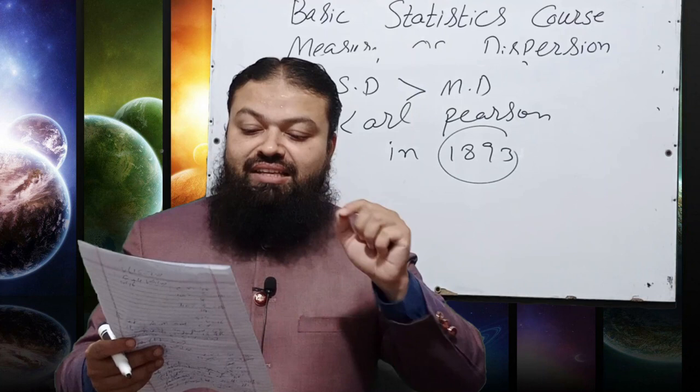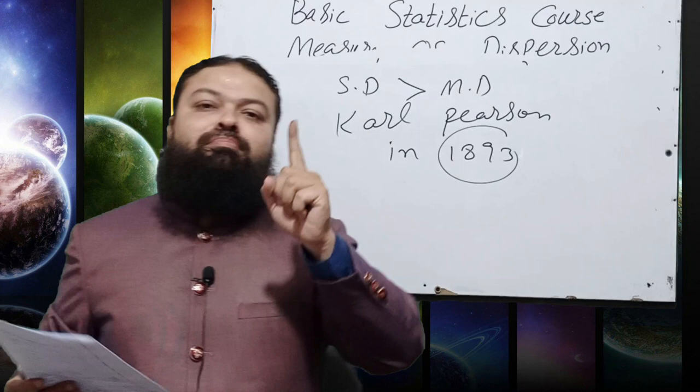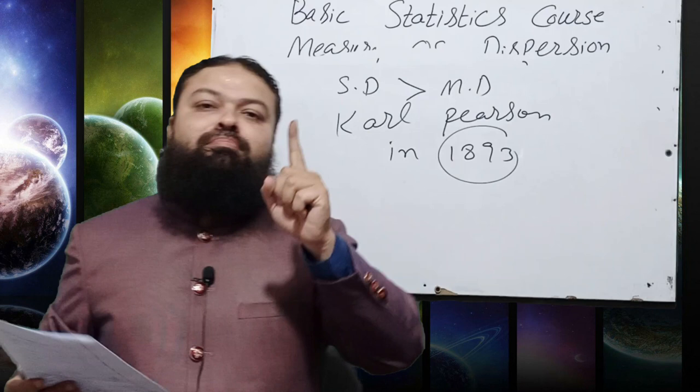Question number 11: Which of the following is the weakest or least useful measure of dispersion? Range is the weakest measure of dispersion.